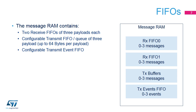Up to three received messages can be stored in each of the two RX-FIFOs. The acceptance filter selects the FIFO to use. Up to three messages to transmit can be stored as part of the message RAM, configured either as a TX-FIFO or as three separate TX-Buffers. Each entry of the RX-FIFO and TX-FIFO or TX-Buffers supports the maximum message size of 64 bytes of payload. The TX-EVENT-FIFO stores TX timestamps together with the corresponding message ID.